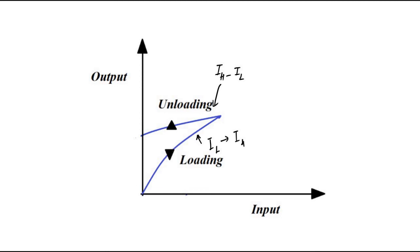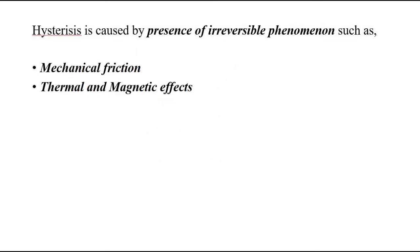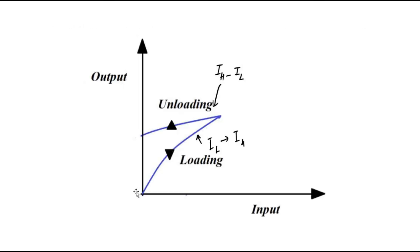There are various reasons why hysteresis can occur. When discussing electrical and electromechanical systems, it can be because of mechanical friction, stray electrical and magnetic fields, and thermal and magnetic effects. In simple words, hysteresis is the difference in the path taken by the input-output relationship curve during loading and unloading. Loading means input is gradually increased from a lower value to a higher value within the operating range, and unloading means decreasing the input from the higher value to the lower value.